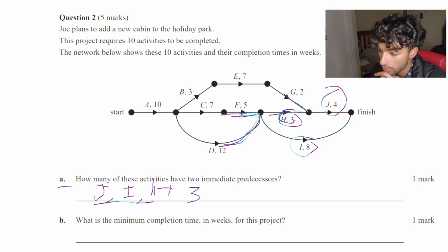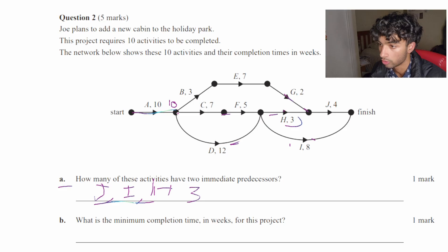What is the minimum completion time in weeks for this project? So when it comes to completion time and weeks and minimum, that means we have to find the critical path. So to find the critical path, we should start systematically from the first activity, and that is 10. And we trial and error for all of these activities.